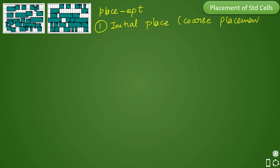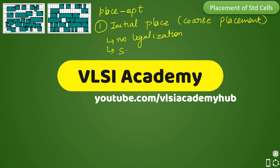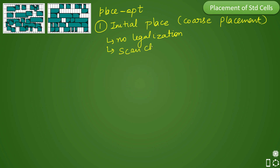In the initial place step, the tool takes the approximate location and tries to place cells. No legalization happens here, so you will not see cells properly placed — they will be overlapping. After that, scan chain optimization is also done in this stage. We will cover scan chain optimization in the next video.